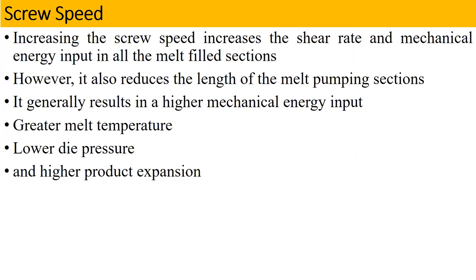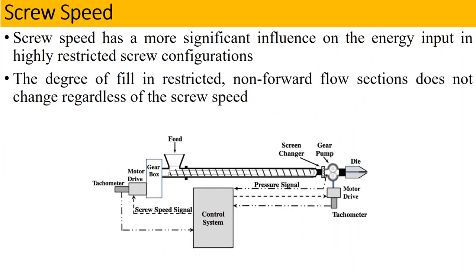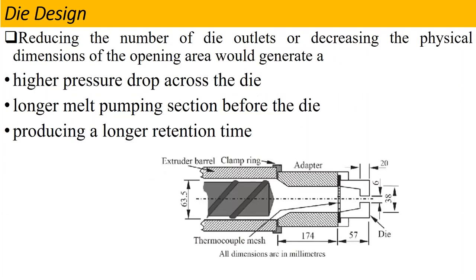We have to add more energy input. The product temperature will increase, but the die pressure will reduce, and the product will also expand. In the same way, we learned about the next characteristic — die design. The die design also significantly affects our extrusion process. If the outlets or opening area are increased or decreased, it is directly linked to our pressure, which will create a pressure drop across the die and affect the product's retention time.